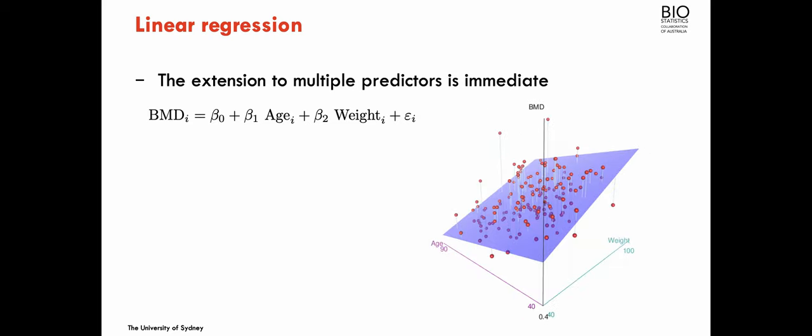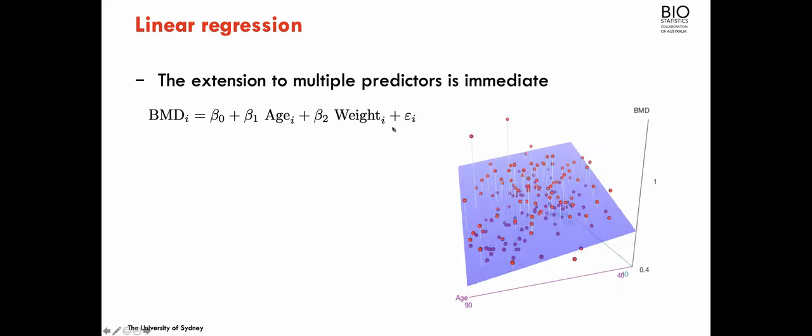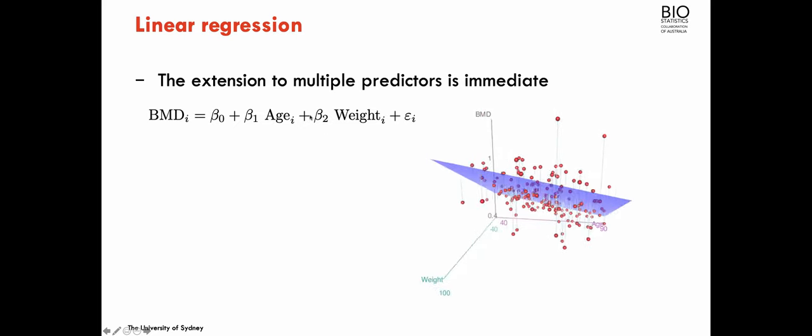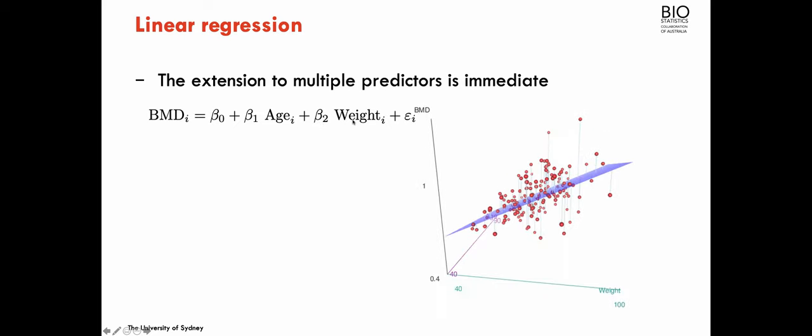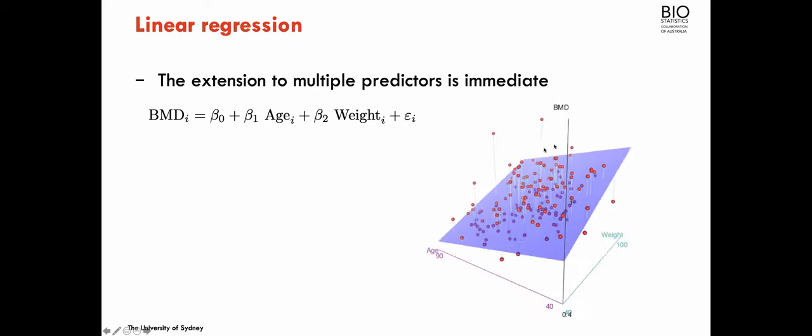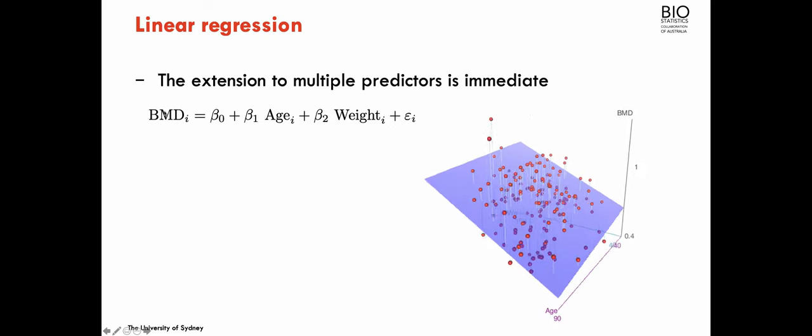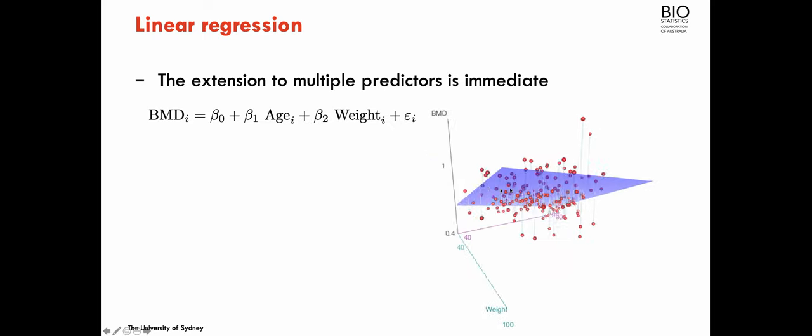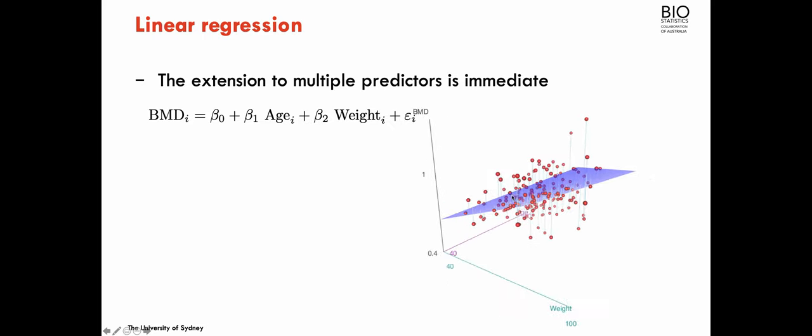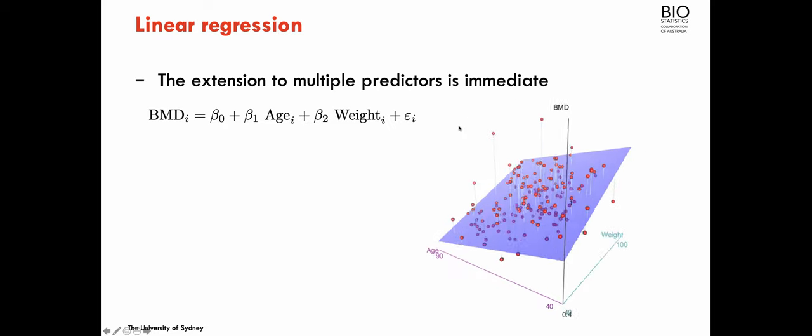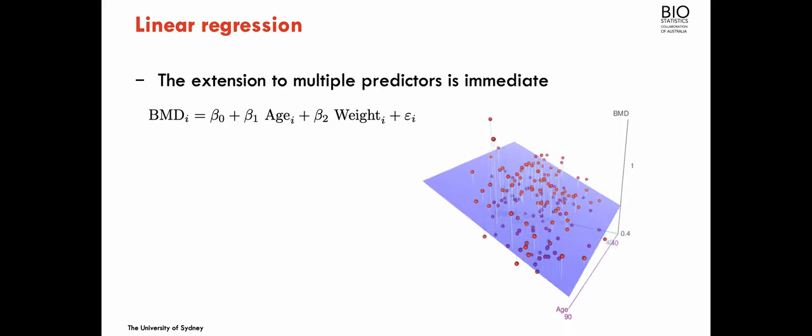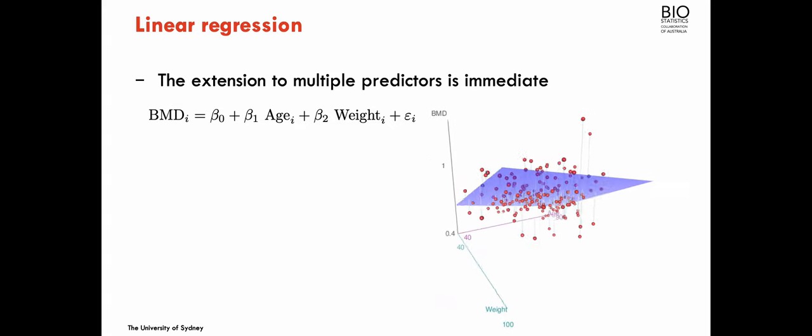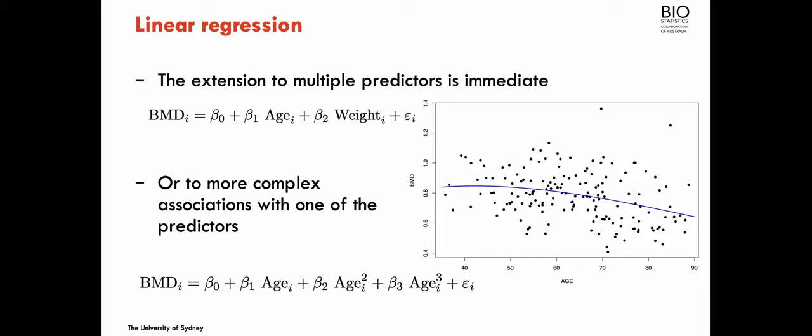We can now extend this idea of simple linear regression to multiple predictors. So rather than having just the age, I can have multiple variables. I have here one more, and we can still plot the representation of this model. I'm fitting basically a plane to the association between age, weight, with BMD. But if I start adding more variables, I start going higher in dimensions, and it's hard to represent hyperplanes, given that we are limited to three dimensions.